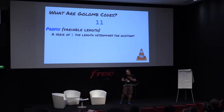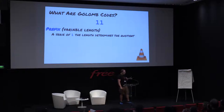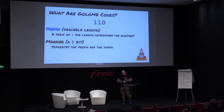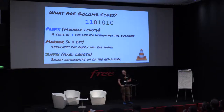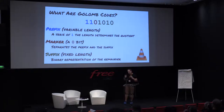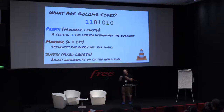For those who don't know, the classic Golomb codes start with a prefix — just a series of ones — and they are variable length, followed by a marker bit that's going to be a zero. This separates the prefix from the suffix. In the classic Golomb codes, the suffix is a fixed length. The way to think of this is like doing a division: the first part gives you the quotient, and the second part gives you the remainder.